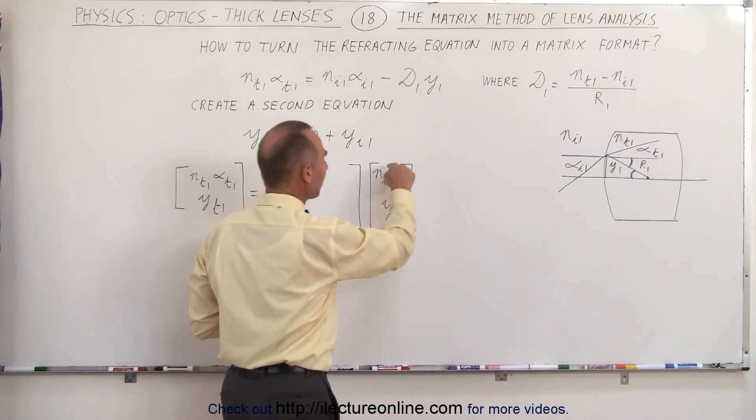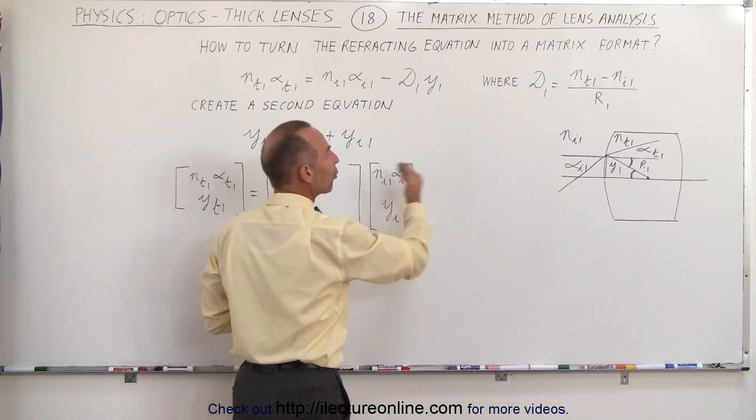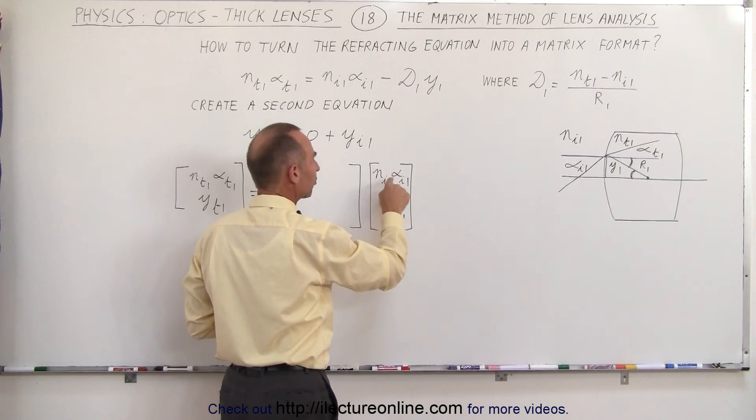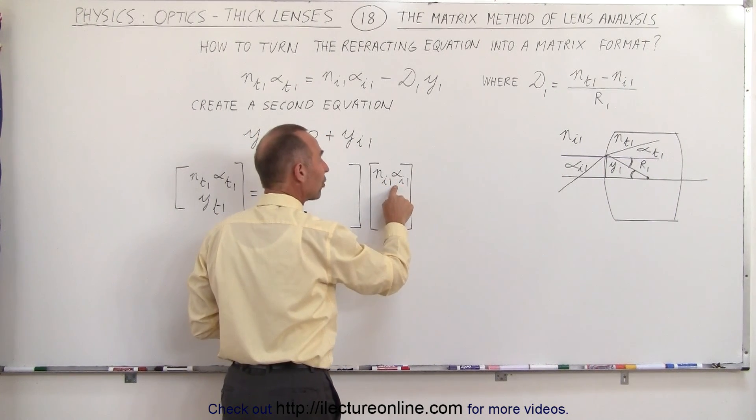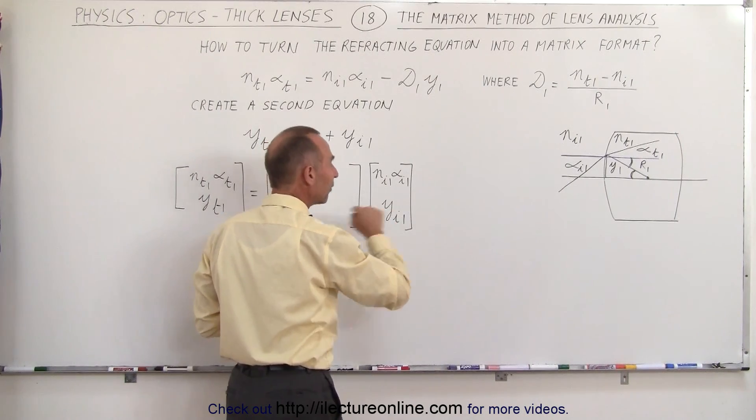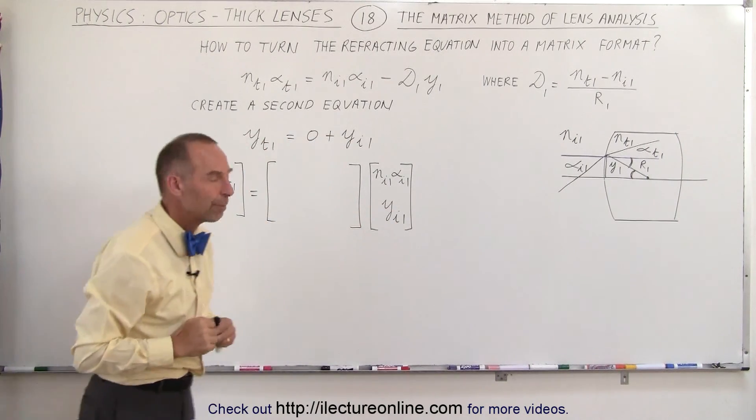And over here the 1 by 2 matrix we have the information about the ray just before the boundary, the index of refraction and the angle relative to the horizontal before the boundary and the height of the entry point just before the boundary.